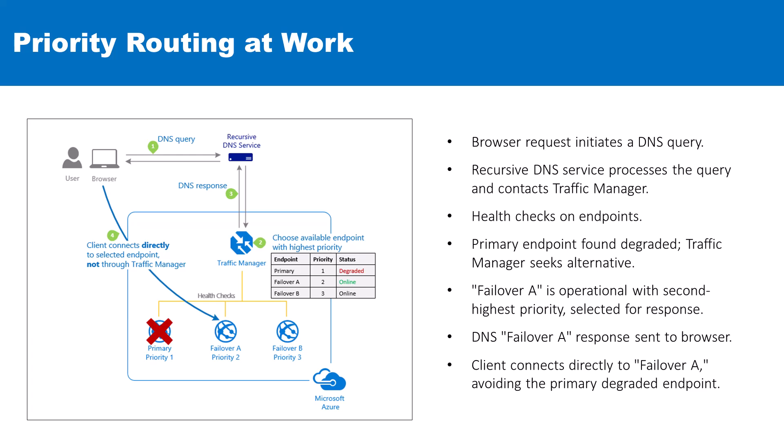Consequently, the Traffic Manager redirects the DNS response to the next highest priority endpoint that is fully operational. Here, failover A is online and has the second highest priority, which makes it the chosen endpoint for the DNS response. This response gets sent back to the user's browser, and the client connects directly to failover A, bypassing that degraded primary endpoint.